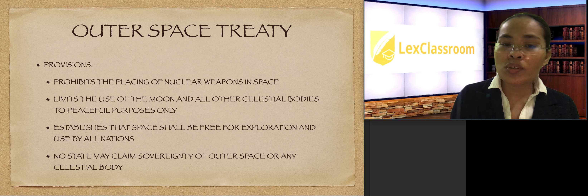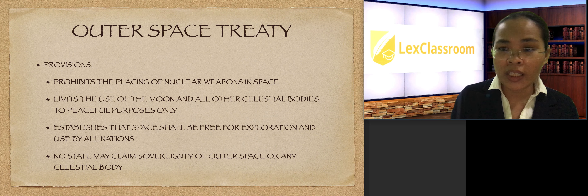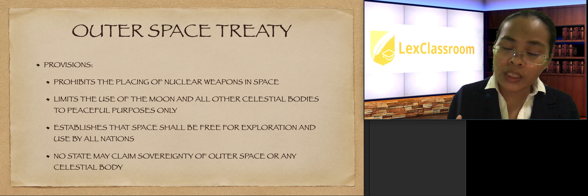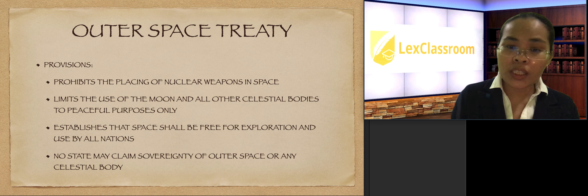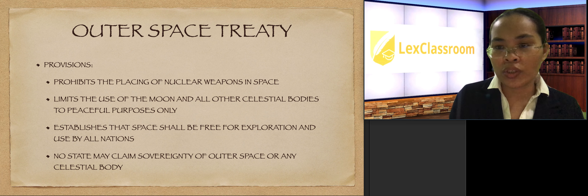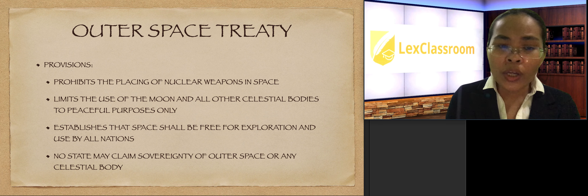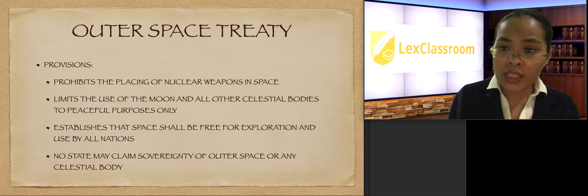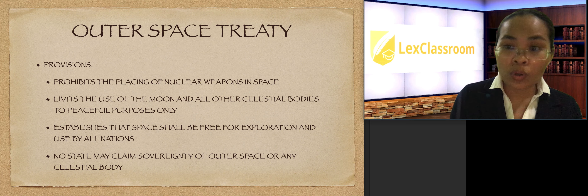The treaty limits the use of the Moon and other celestial bodies to peaceful purposes only, to guarantee global peace and prevent World War III. It also establishes that space shall be free for exploration and use by all nations — a common heritage of mankind, or res communis. No state may claim sovereignty over outer space or any celestial body, even by discovery or occupation.